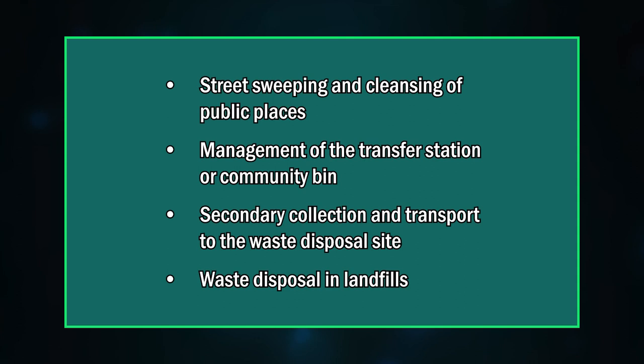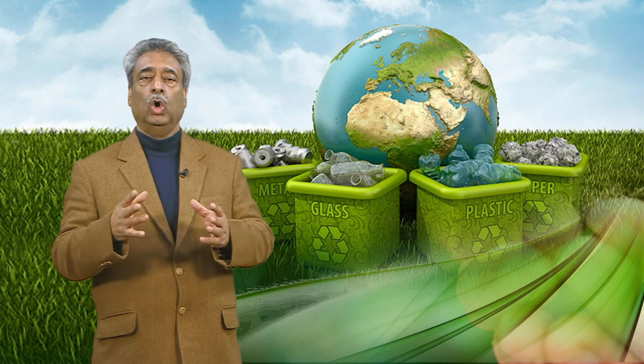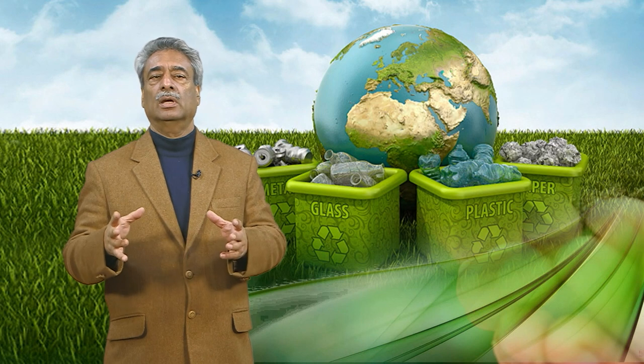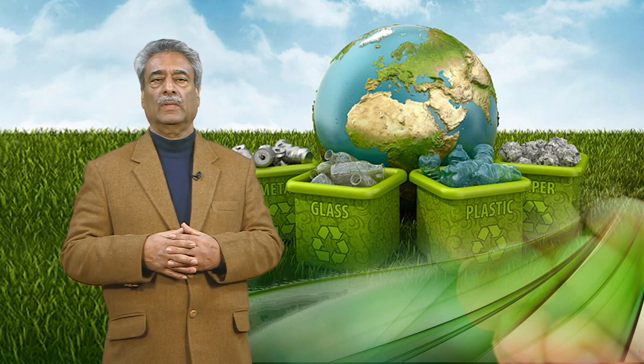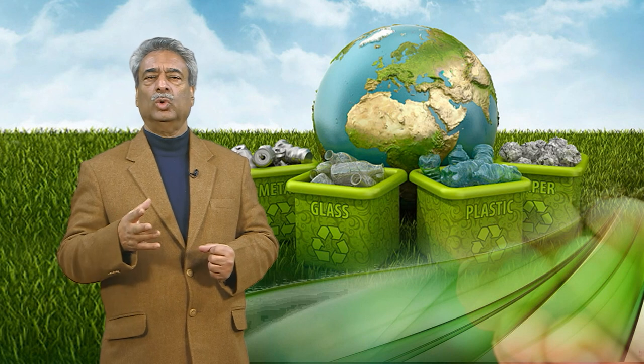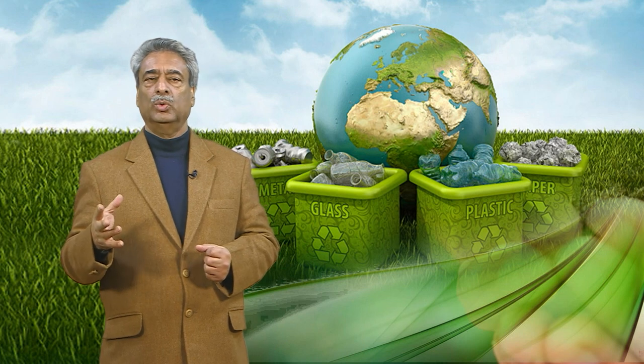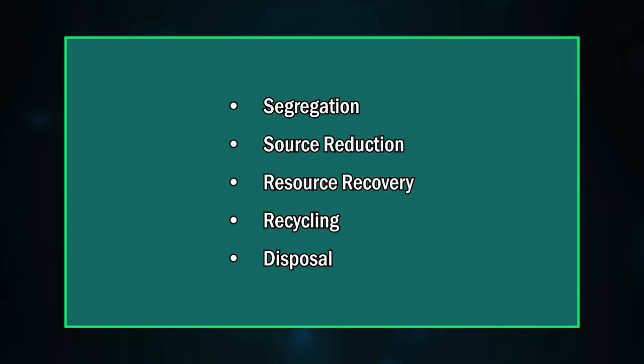Other elements include street sweeping and cleansing of public places, management of the transfer station or community bin, secondary collection and transport to waste disposal sites, and waste disposal in landfills. However, in most Indian states, open dumping is the common practice, adversely affecting the environment and public health. The main control measures of urban industrial waste include: segregation, source reduction, resource recovery, recycling, and disposal.